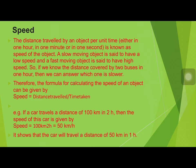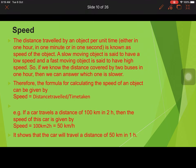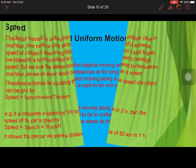Next is speed. Speed is the distance traveled by an object per unit time. Speed equals distance traveled divided by time taken. For example, if a car travels 100 km in 2 hours, then the speed of the car is 50 km per hour — that is 100 km divided by 2 hours.